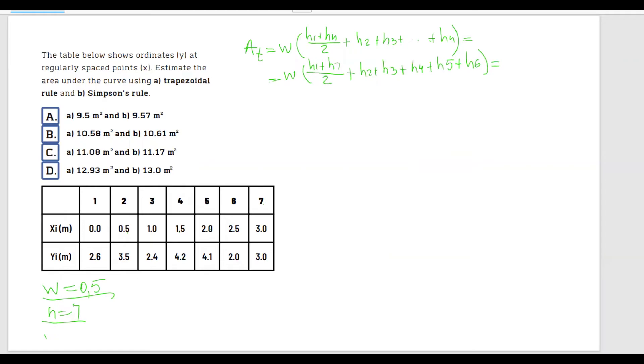Plus h2 plus h3 plus h4 plus h5 plus h6 equals. And now we will just substitute w equals to 0.5 multiplied h1, 2.6, plus h7 is 3 over 2, plus h2, 3.5, plus 2.4, plus 4.2, plus 4.1, plus 2 equals.